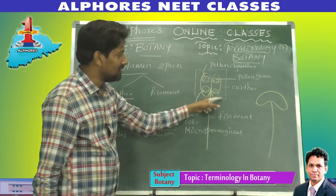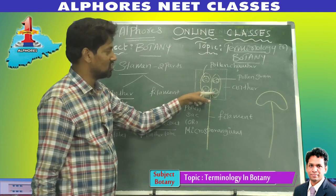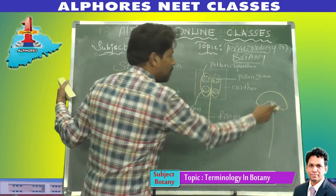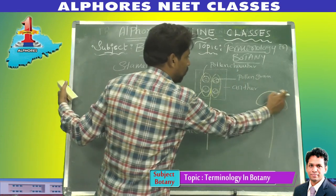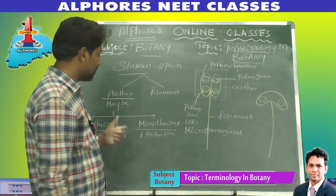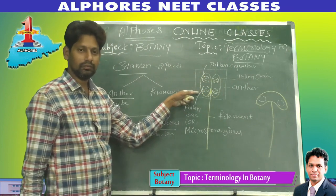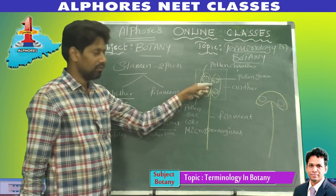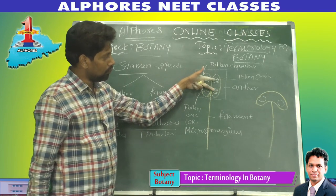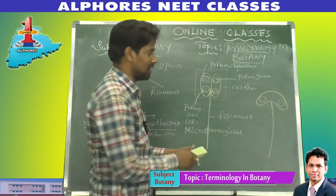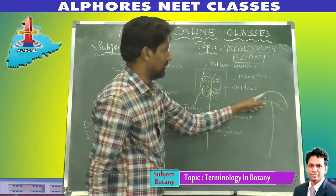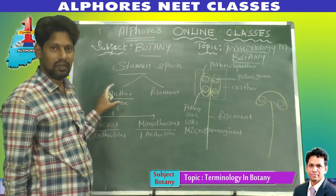A dithecous anther has two anther lobes and four pollen chambers. A monothecous anther has one anther lobe and two pollen chambers.